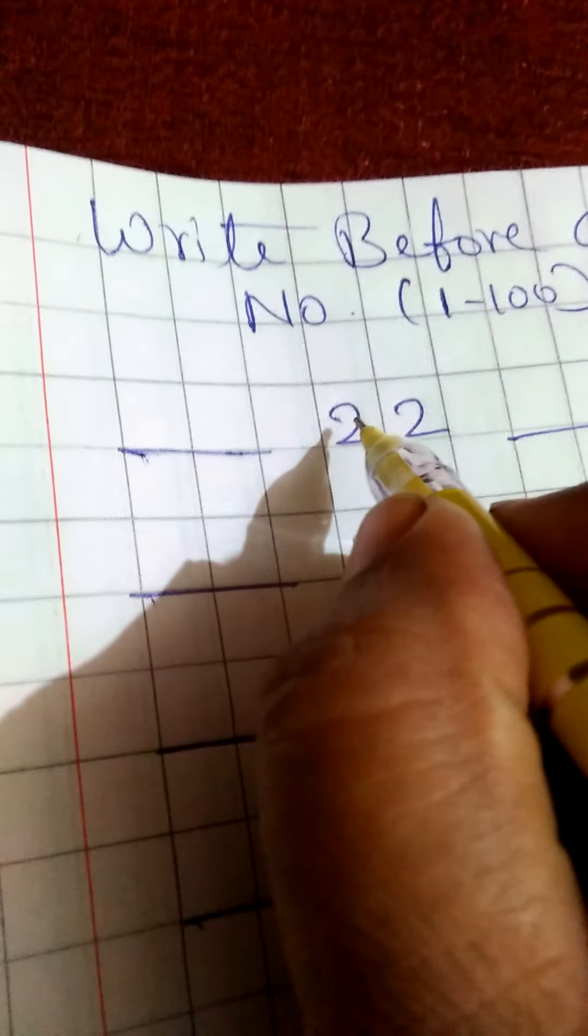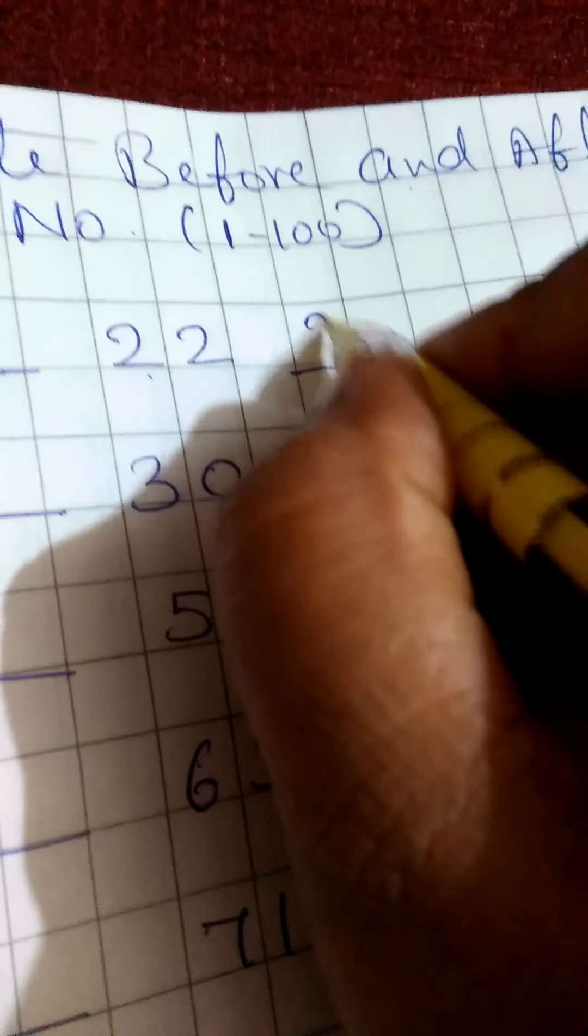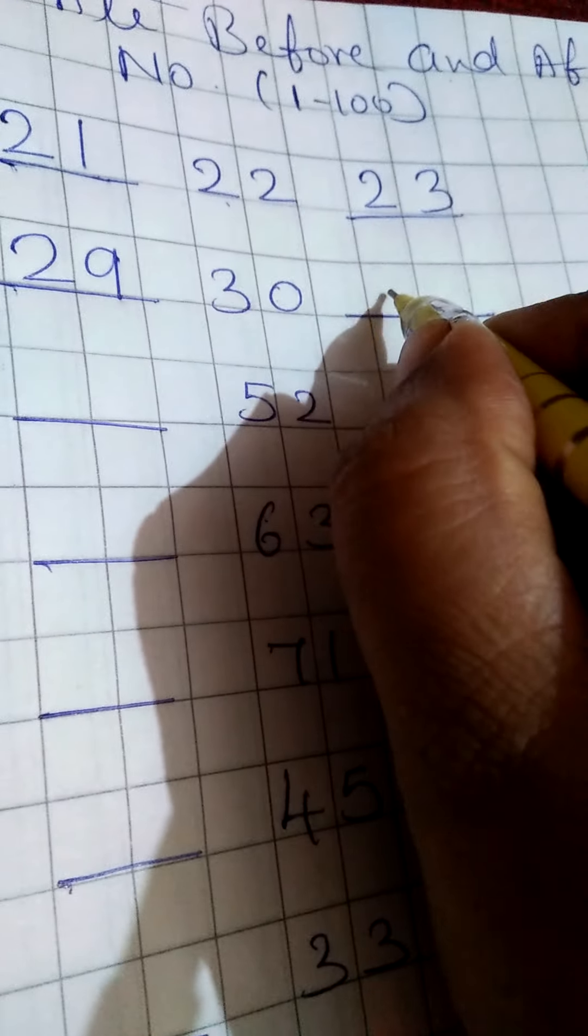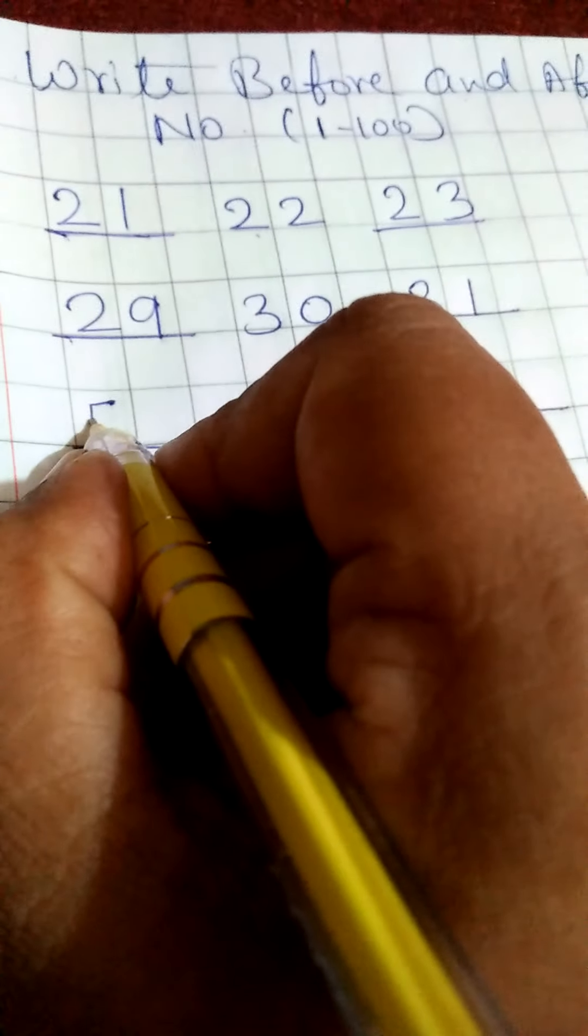Okay, 22 se pehle kaun sa number aata hai. 21, 22 and 23. And here 30, 29, 30 and 31. Here 51.